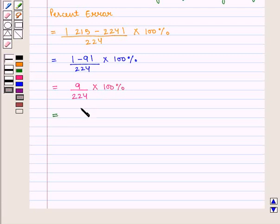This equals 900 divided by 224%, which on further solving gives us 4.01%. That is, we get 4.01% as the percent error, and by rounding it to the nearest tenth of a percent, we get 4.0%.